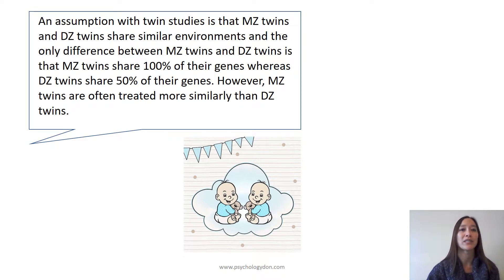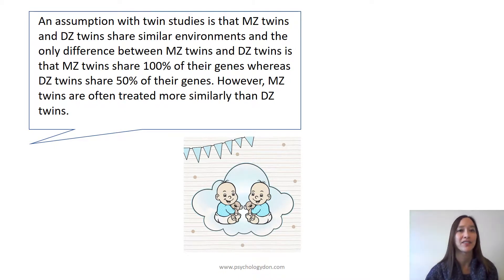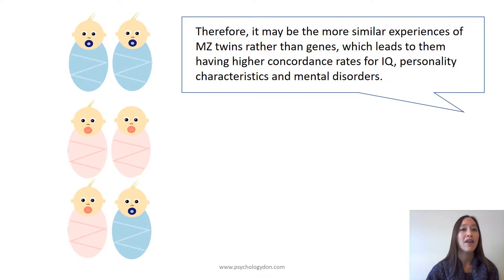However, an assumption with twin studies is that MZ twins and DZ twins share similar environments, and the only difference between them is that MZ twins share 100% of their genes, whereas DZ twins share 50% of their genes. However, MZ twins are often treated more similarly than DZ twins. Therefore, it may be the more similar experiences of MZ twins rather than their genes which leads them to have higher concordance rates for IQ, personality characteristics, and mental disorders.